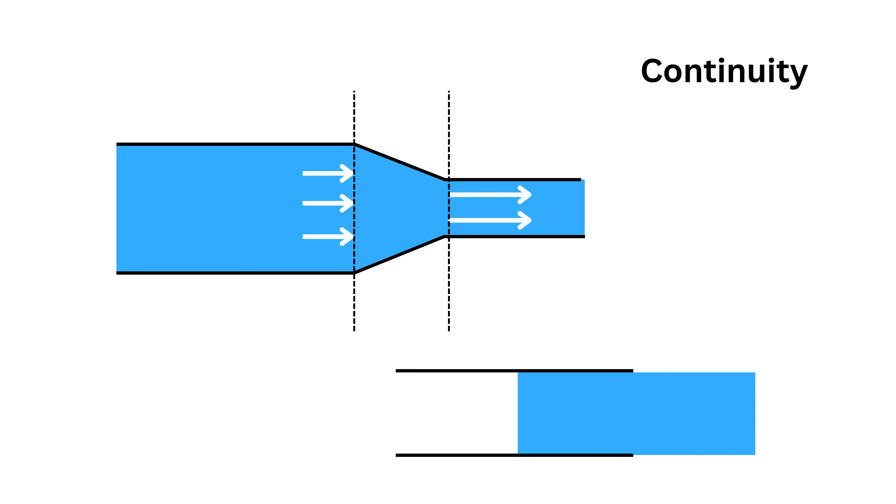which just means that whatever fluid goes in must come out. Imagine you're pouring water through a funnel. If the top is wide and the bottom is narrow, but the same amount of water flows through each part every second, then clearly the water at the narrow end has to move faster to keep up with the constant flow rate across the pipe. That's all the continuity principle is saying.